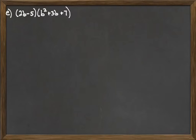So nothing changes. We're still going to take each thing in the first one times each thing in the second one. So we're going to take our 2b times the b squared, the 3b, and the 7, and the minus 5 times the b squared, the 3b, and the 7. So we start to do that.